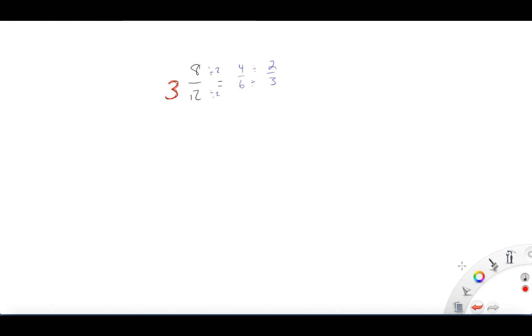So really, our new answer is, let's put this in red, 3, because we dropped this down, all these cancel off, and 2 over 3. So this is our new answer. So instead of 3 and 8 over 12, it's 3 and 2 over 3. All we did was reduced that fraction.